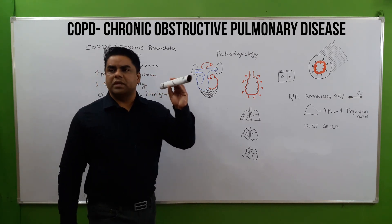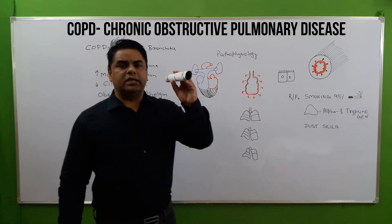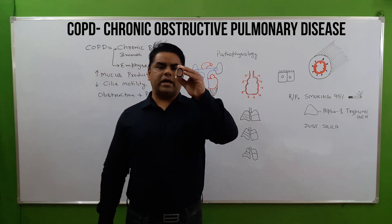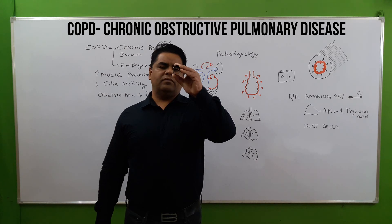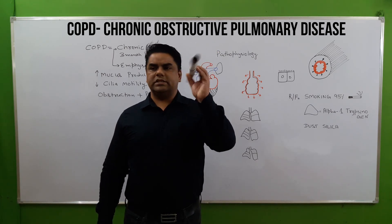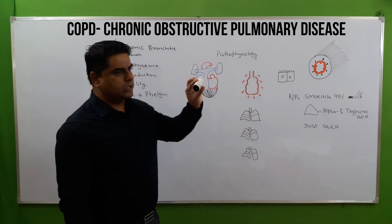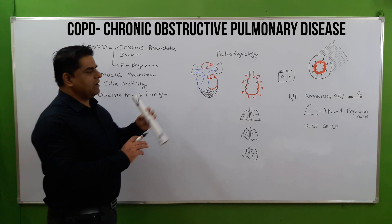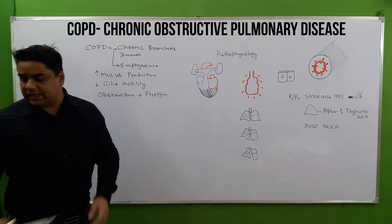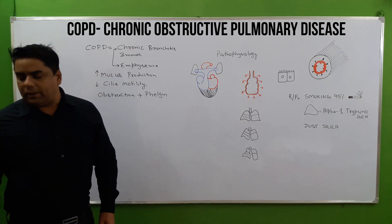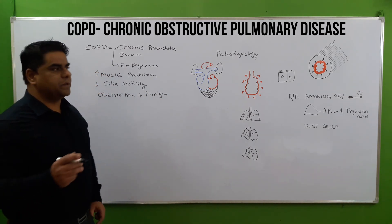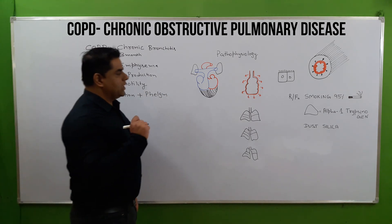Let's assume that this tube represents our bronchi or bronchiole. This is a tube-like structure which has a smooth muscle layer and goblet cells, which produce mucus.